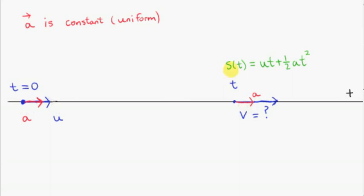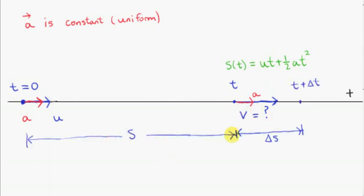We know from previous videos that the displacement of the particle is given by this formula. The displacement s is a function of time, given by ut plus a half at squared. We will use this formula to get the velocity of the particle at time t. The distance the particle has travelled is s, and after a very small interval of time delta t, the particle travels a distance delta s — the change in s.